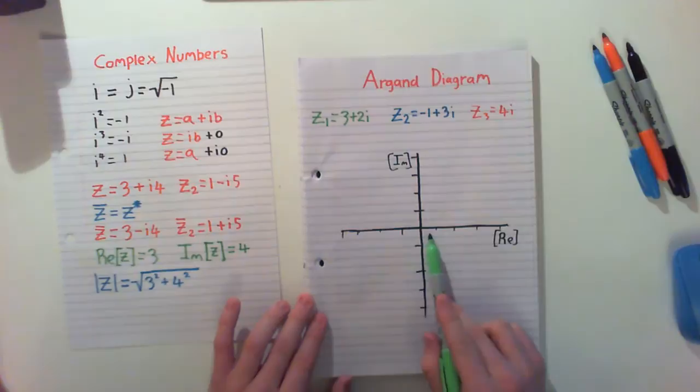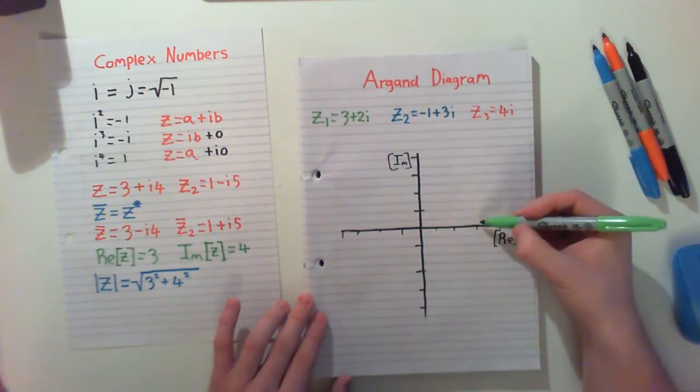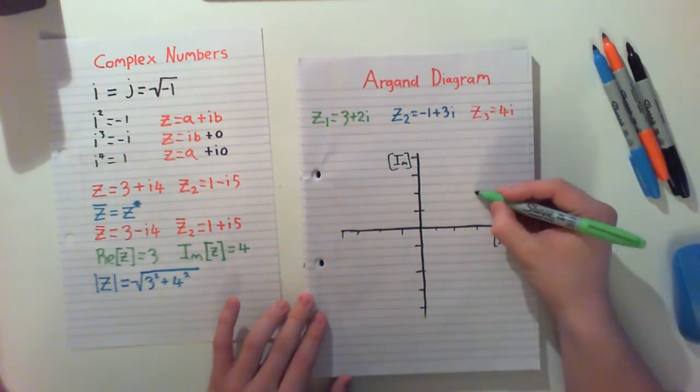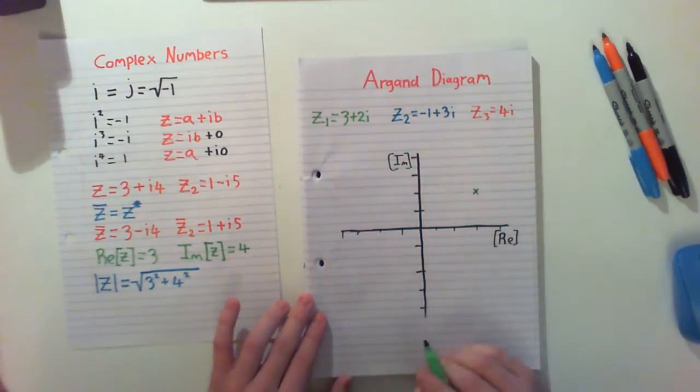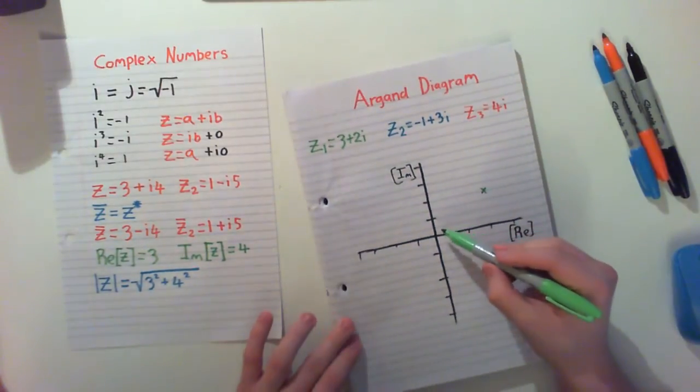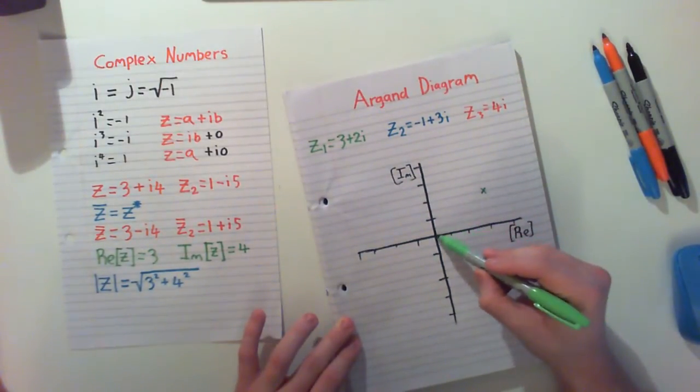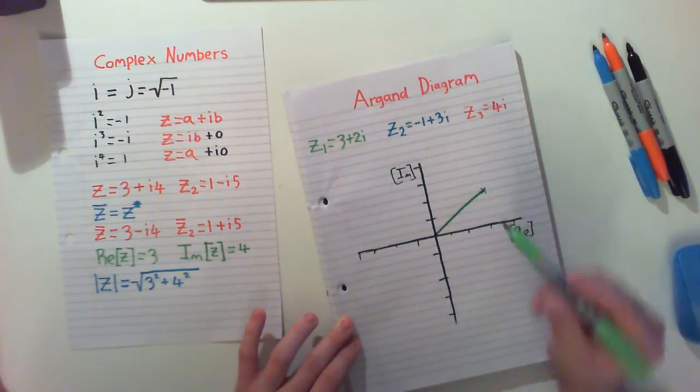So for the X we'll go across to 3, 1, 2, 3, and for the imaginary, 1, 2, up, just there. So we can plot our point here. And what we actually do is we draw a line straight from the origin going to our point there.